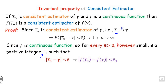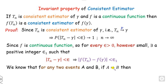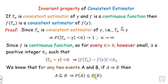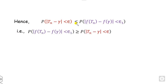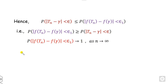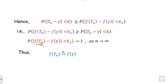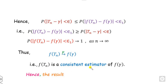Now, applying probability to both sides: if events A and B satisfy A implies B, then A is a subset of B, so P(A) ≤ P(B). Applying this rule, P(|f(t_n) - f(gamma)| < epsilon) ≥ P(|t_n - gamma| < delta_1). Taking n to infinity, the right-hand side converges to 1 because t_n converges to gamma in probability. This implies f(t_n) converges to f(gamma) in probability, so f(t_n) is a consistent estimator.